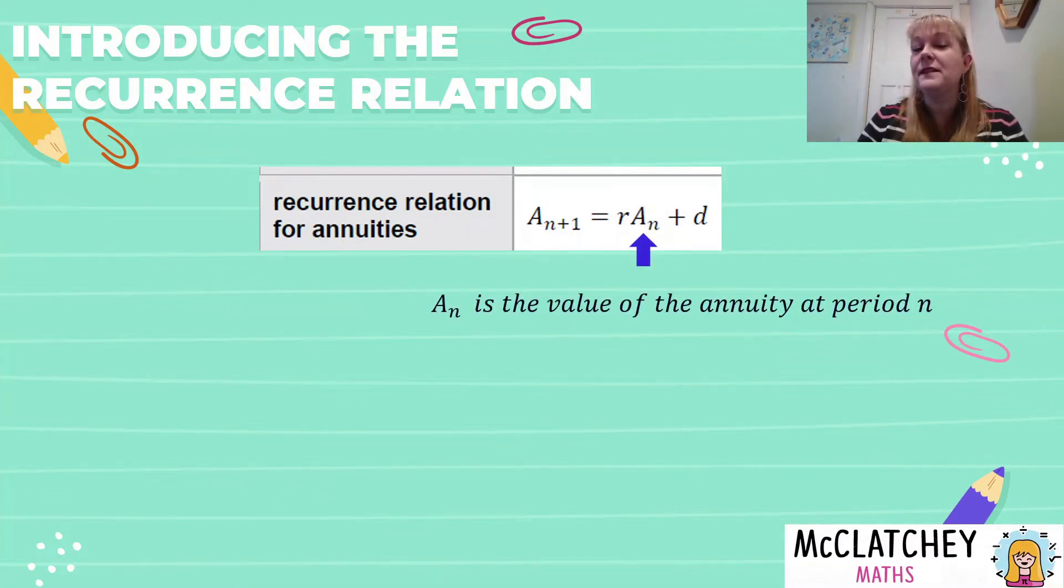So remember when we talked in our last video, that one of the key features of an annuity is that we are adding to our investment every period. So if this was a monthly investment, every month we're going to put the same amount of money aside into our savings for the future. So that's represented here by the variable D.